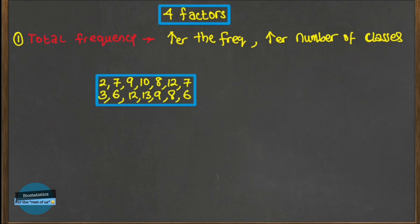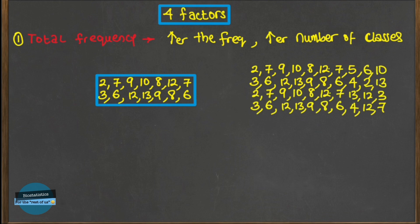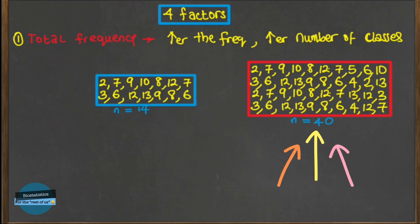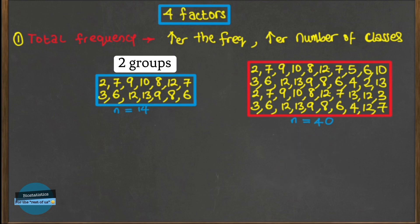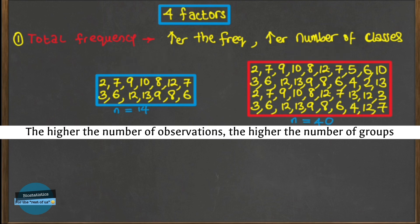Consider these two data sets representing the number of clinic visits per year. The first is from 14 individuals in one clinic and the second from 40 individuals in another clinic. The second one should have a higher number of classes because it has a higher number of observations. So maybe if we categorize the first into two groups, the other can go into as many as five groups. Remember: the higher the number of observations, the higher the number of classes required to represent your data properly.